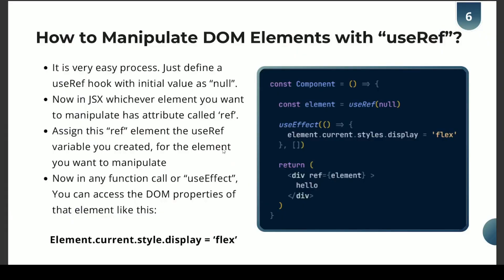Let's see how to manipulate DOM elements with the useRef hook. It is a simple process — just define a useRef hook with an initial value of null. Then we can assign a specific element, in this case a div, using the ref attribute. As you can see here, you assign the ref attribute of the element to the variable you created. In this case, element is the variable we created and we are assigning it here.